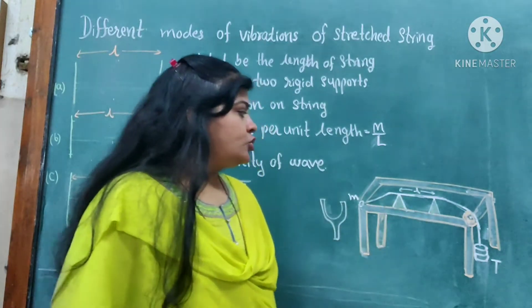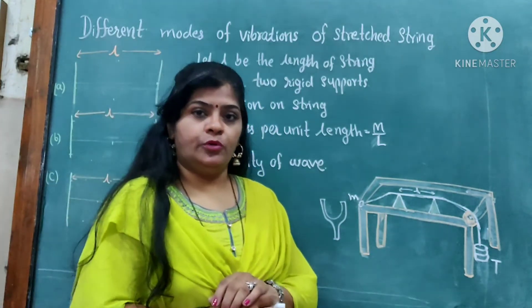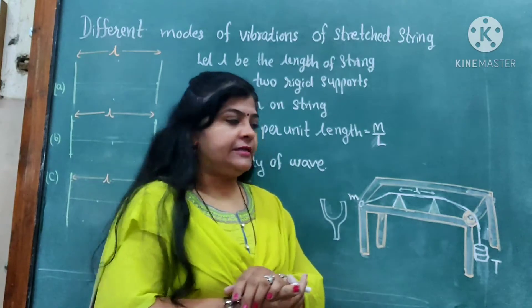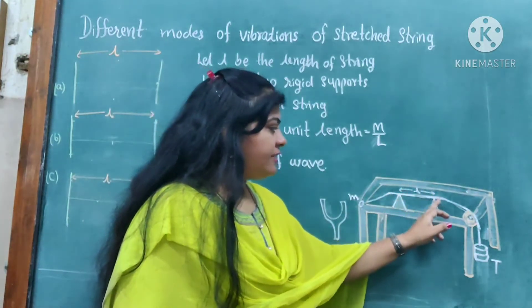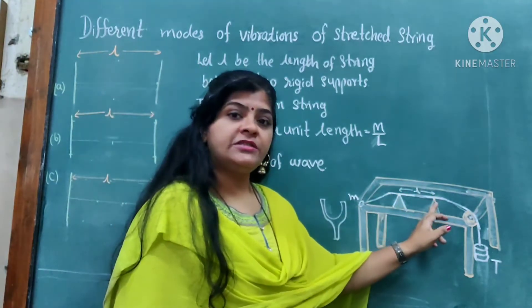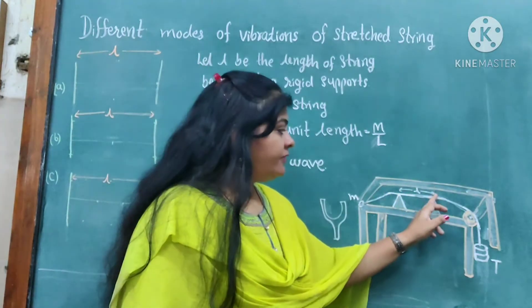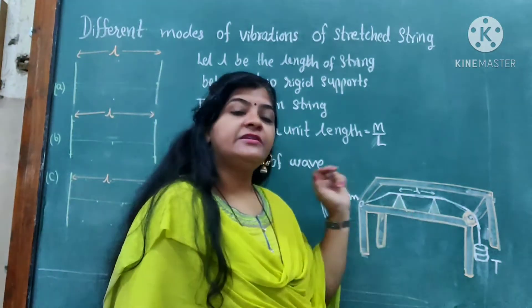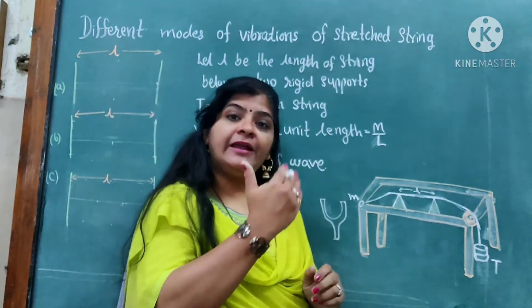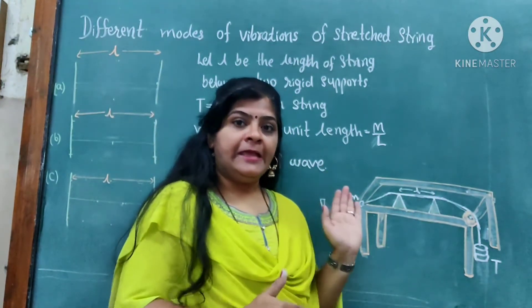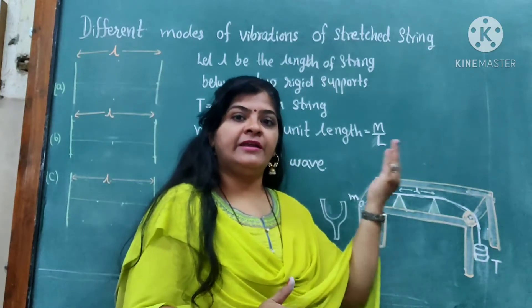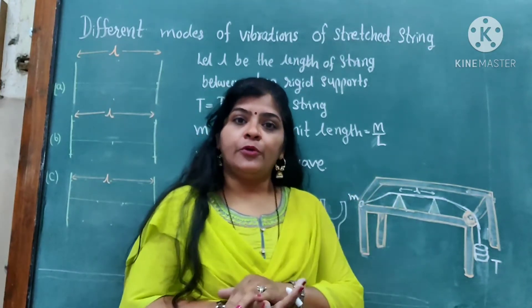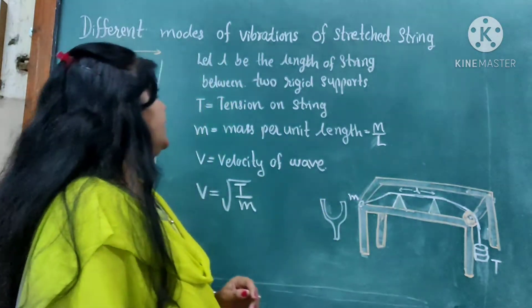Because of these two rigid supports, the wave which is created travels along the string. And when the rigid support is there, this string is reflected back. The incident wave and reflected wave both will produce the stationary wave.